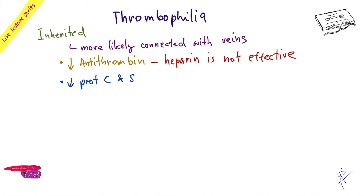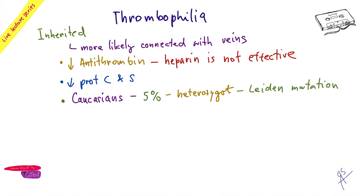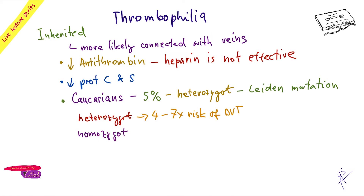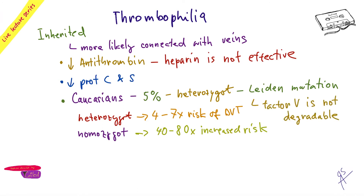You can also have an inherited decrease of protein C and S. These are rare - like 1% of DVTs. For Caucasians, the most common thrombophilia is the Factor V Leiden mutation - about 5% of us carry the mutated gene as heterozygotes. This is the most common inherited thrombophilia. Heterozygotes have a seven-times higher risk of DVT. If you are homozygous, the risk is eighty times increased. The factor V is mutated and cannot be degraded by protein C and S - that is why you form more thrombin.